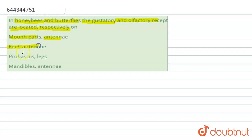Four options are given: mouth parts and antenna; feet and antenna; proboscis and legs; and mandibles and antenna.